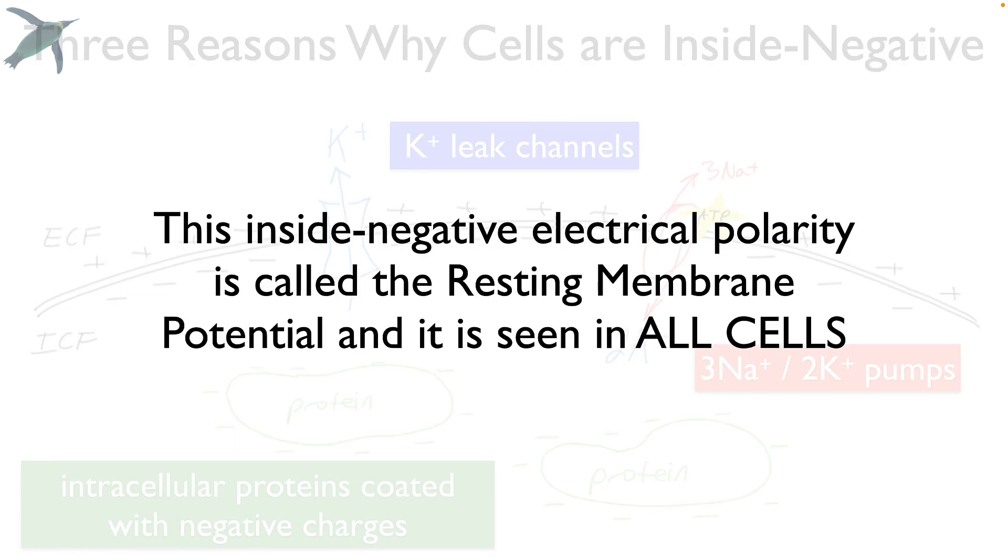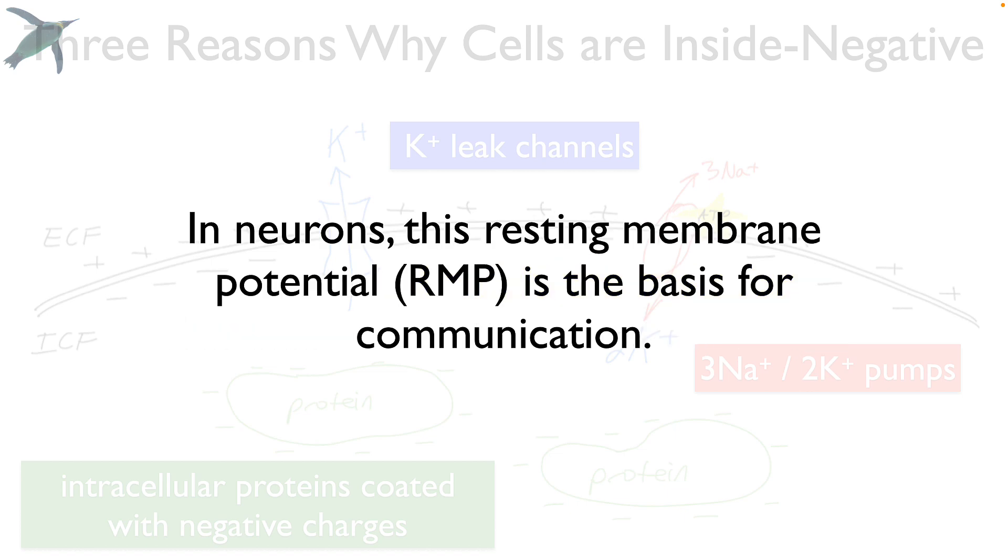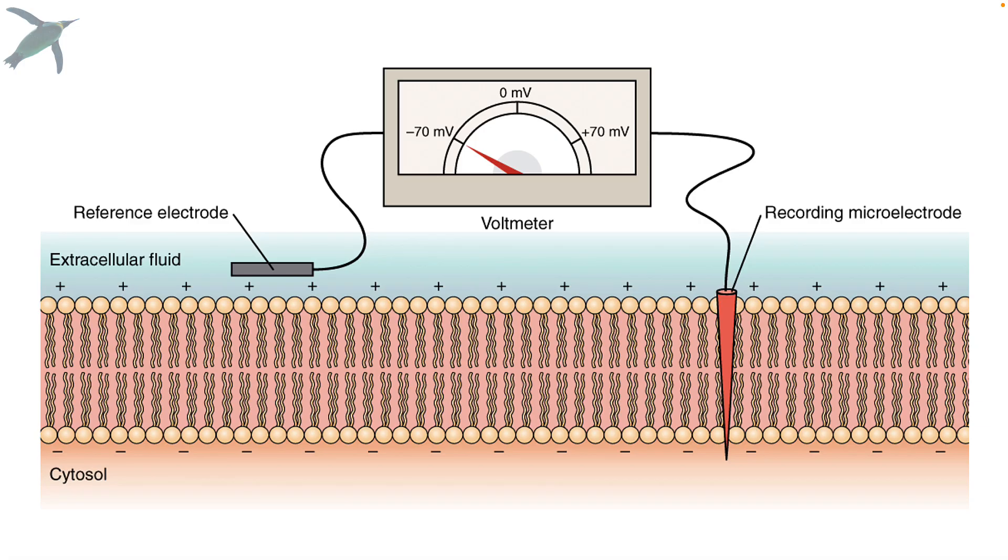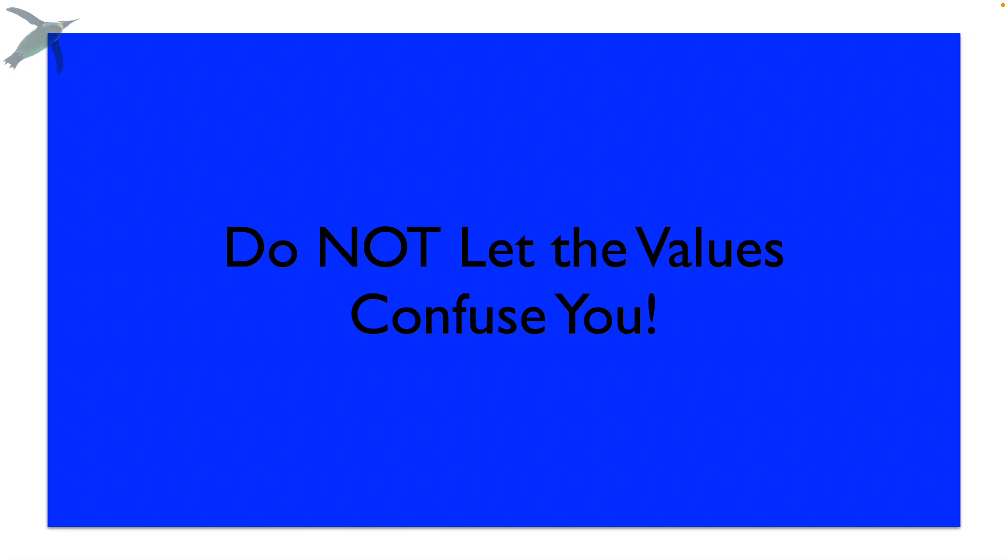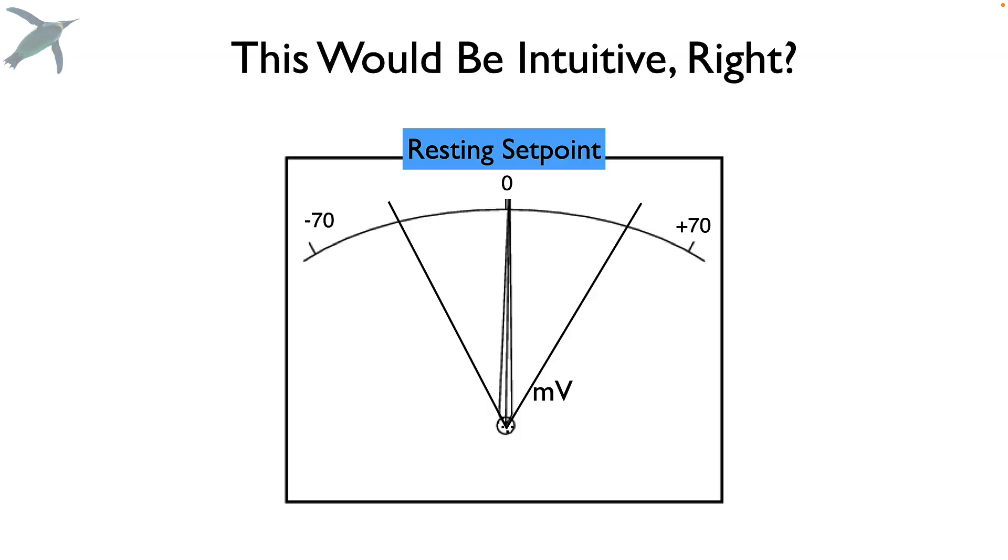So this inside negative electrical polarity is called the resting membrane potential. In neurons, this is the basis for communication and information. So we're going to go back to this voltmeter here. Do not let the values confuse you. This would be intuitive.